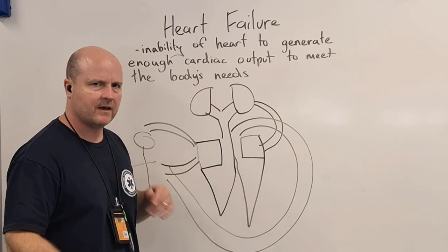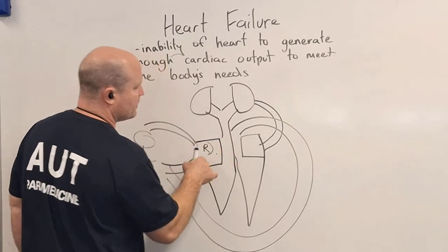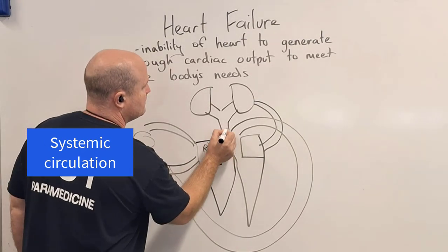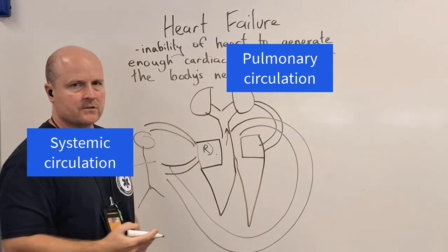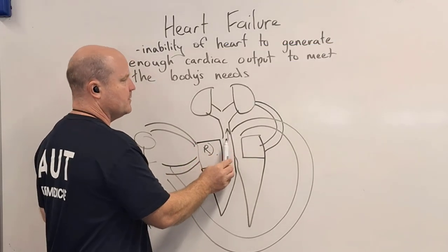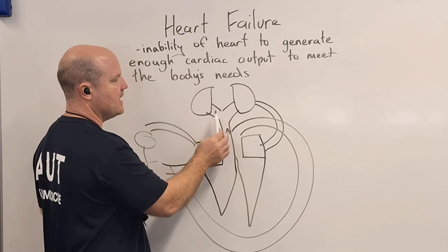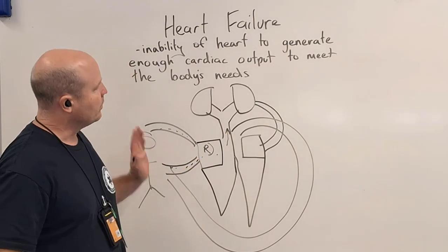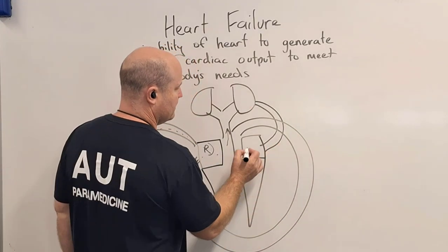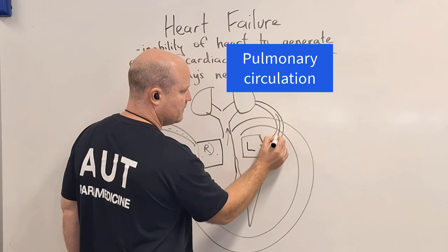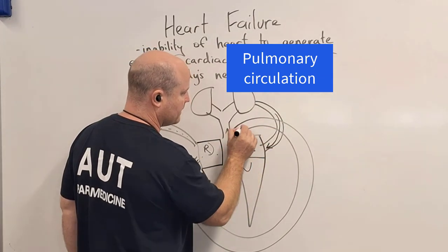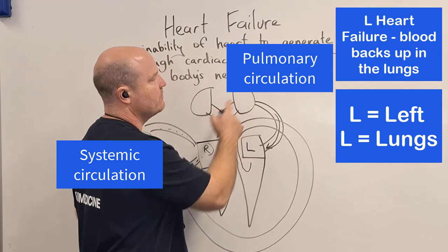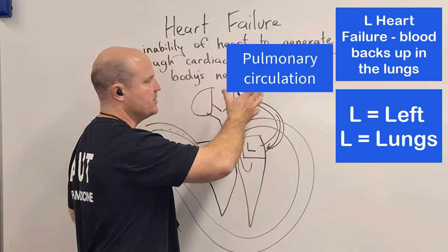If we look at one side of the heart failing: the right side takes blood from the rest of the body and sends it to the lungs. If the right side of the heart fails, it will be slow at delivering blood to the lungs, so blood will start to back up into the body. On the left side, it takes blood from the lungs and gives it to the rest of the body. If the left side fails and isn't pumping blood away from the lungs, we'll get a build-up of blood pressure in the lungs.